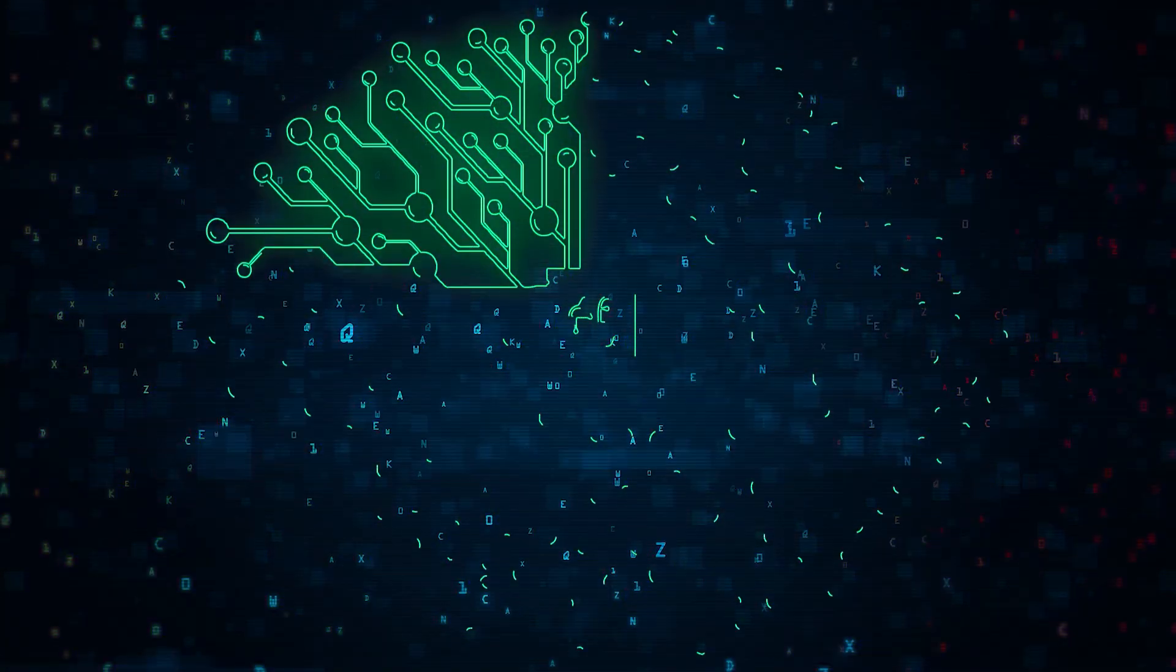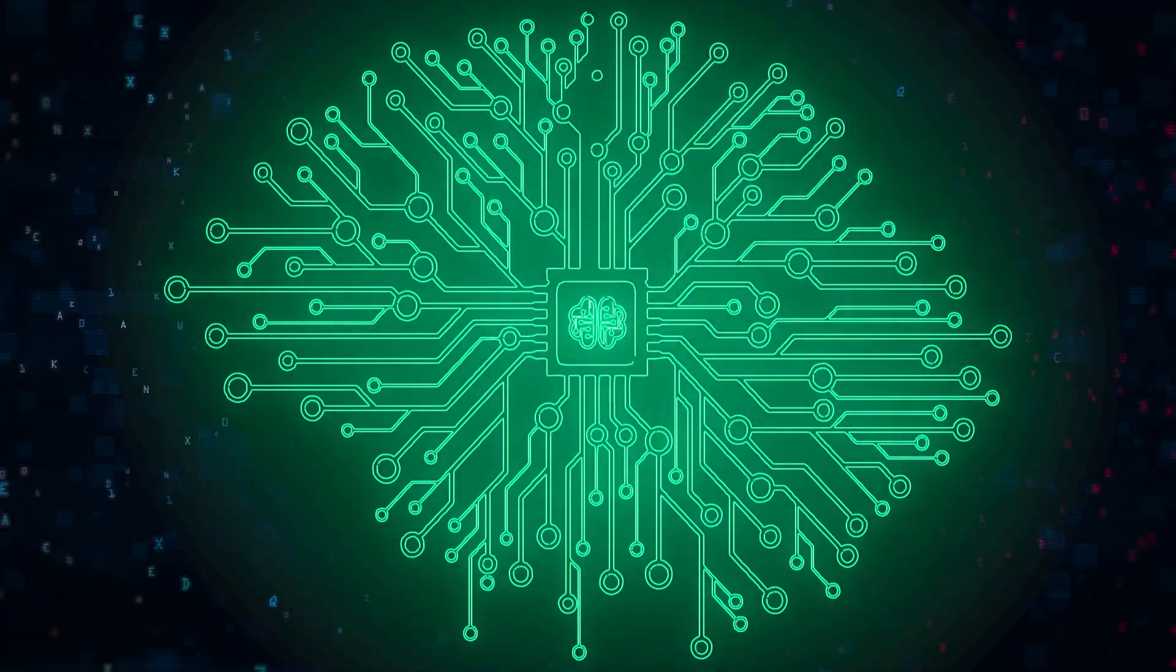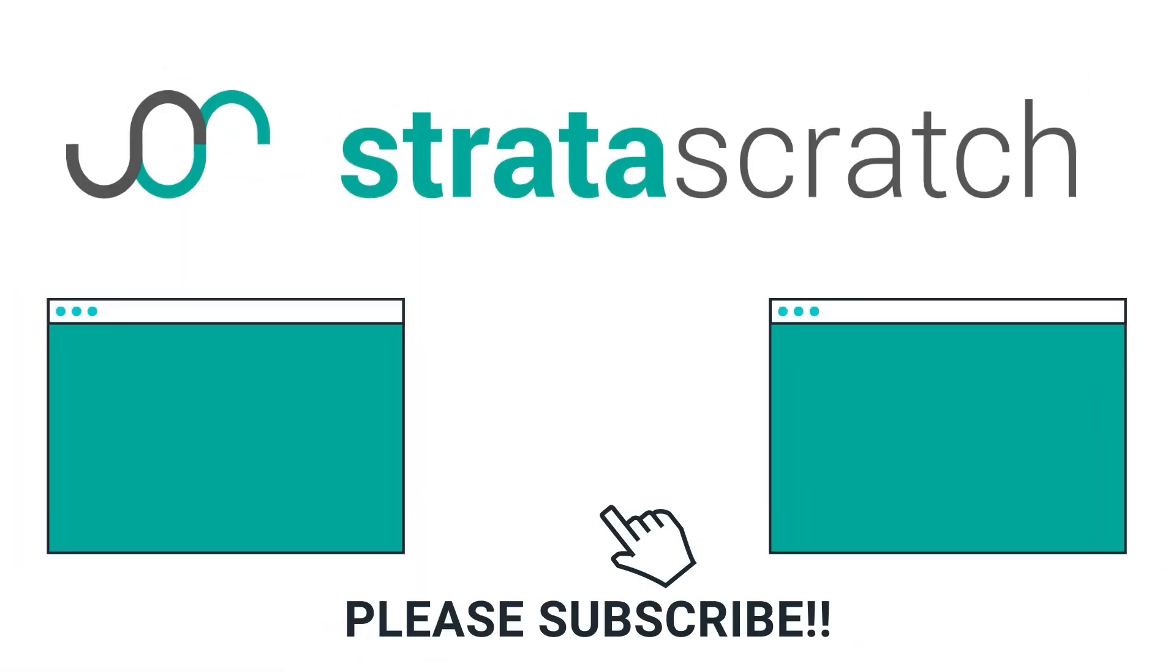So that's basically it. That's three different types of machine learning models and some of the popular algorithms out there. If you like this type of content, please subscribe to my channel and go to stratascratch.com for more data science resources. Thank you.